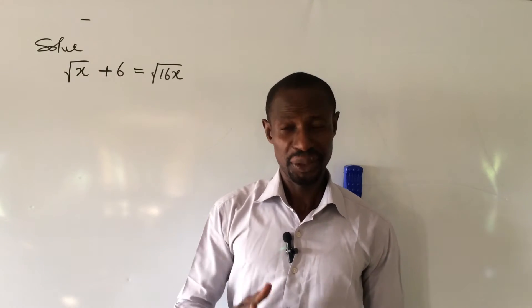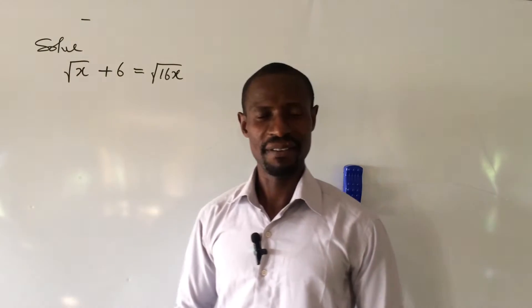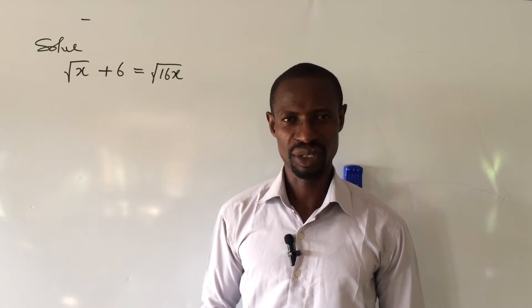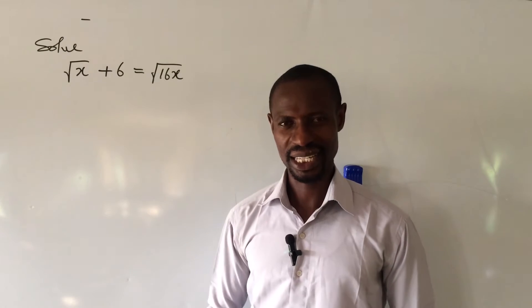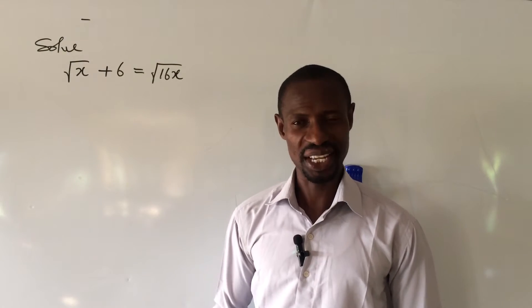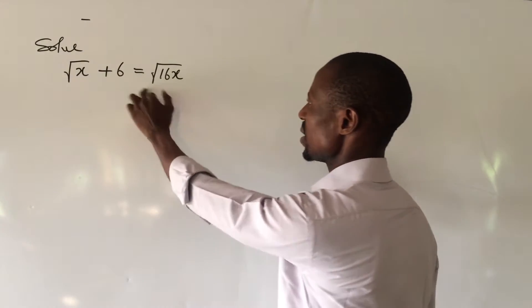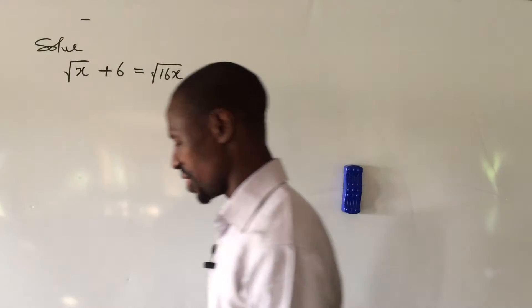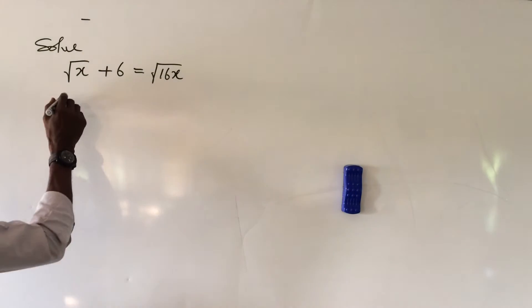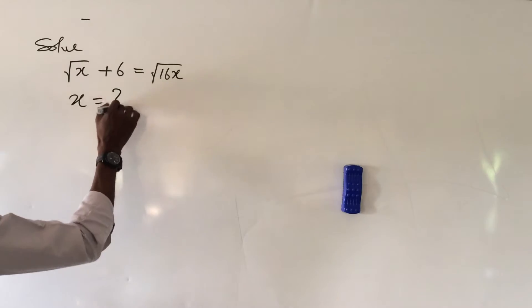Again, this is Ollieman's TV, you're welcome once again. We have a very simple challenge. Let's catch some clues here, let's have some fun. The question says: root x plus six equals root 16x. What then is the value of x?